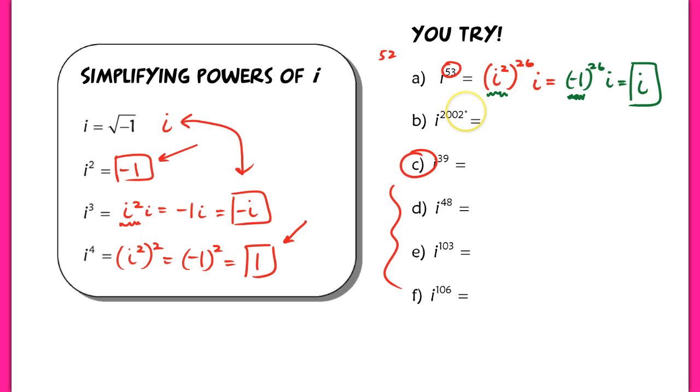For i to the 2,002nd power here, I'm going to divide this number by 2. So I have i squared to the 1,001st power. 1,001st power, which is now going to simplify to negative 1 to a very large odd number. And that's just simply negative 1.